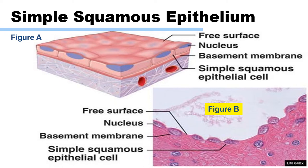Simple squamous epithelial tissue forms thin, delicate sheets of cells through which molecules can easily pass by diffusion or filtration. Simple squamous epithelium can be found lining capillaries, inside blood vessels, alveoli of the lungs, the glomerulus of the kidneys, and the heart.